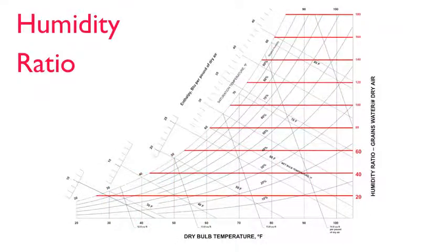Humidity ratio runs along the Y axis and is indicated by the evenly spaced horizontal red lines.